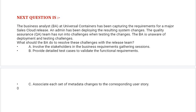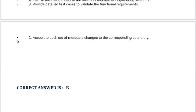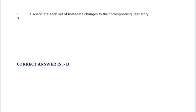What should the BA do to resolve these challenges with the release team? Option A: Involve the stakeholders in the business requirements gathering sessions. Option B: Provide detailed test cases to validate the functional requirements. Option C: Associate each set of metadata changes to the corresponding user story. Correct answer is Option B.